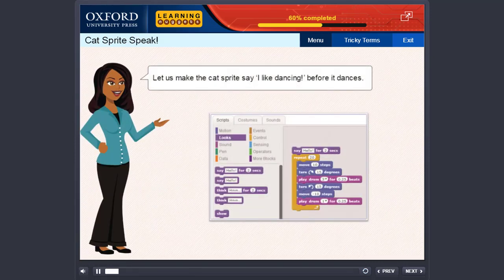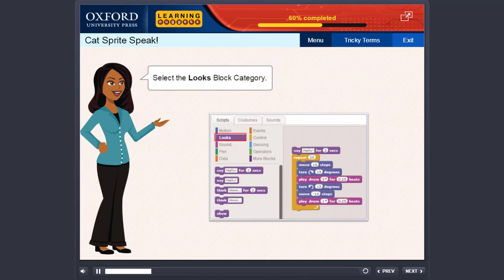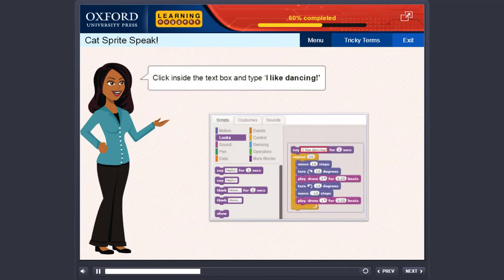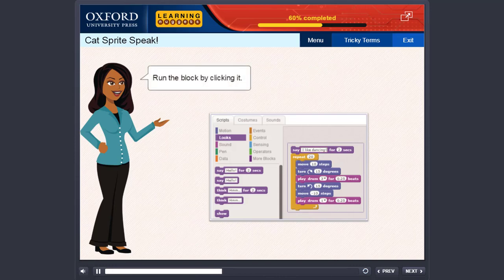Let us make the cat sprite say I like dancing before it dances. Select the Looks block category. Drag the Say block and snap it at the top. Click inside the text box and type I like dancing. Run the block by clicking it.